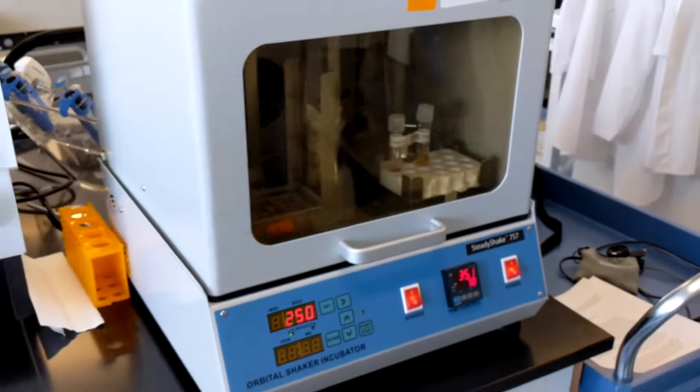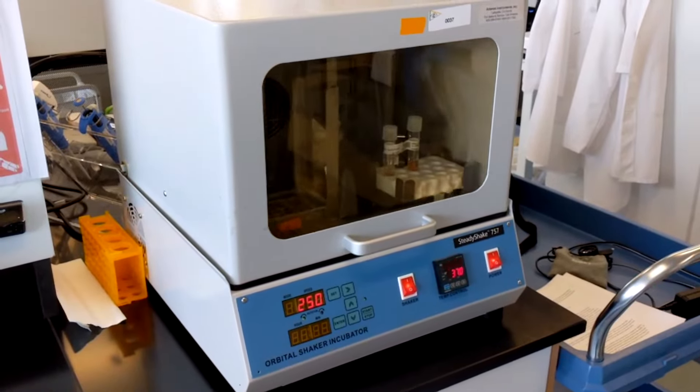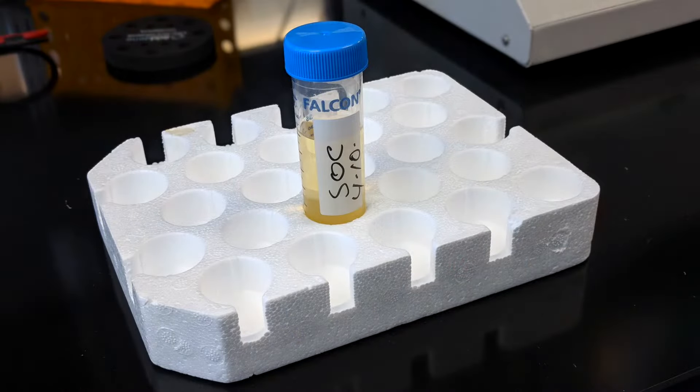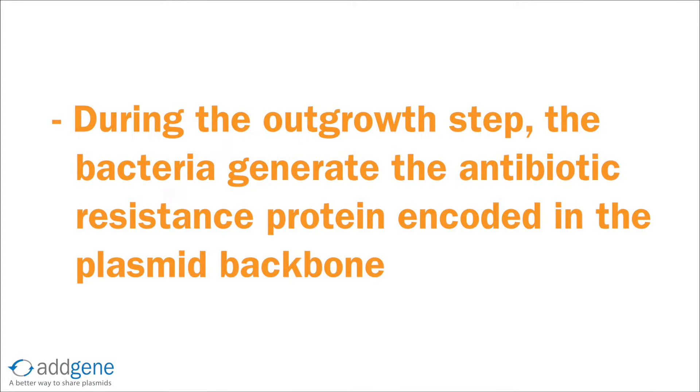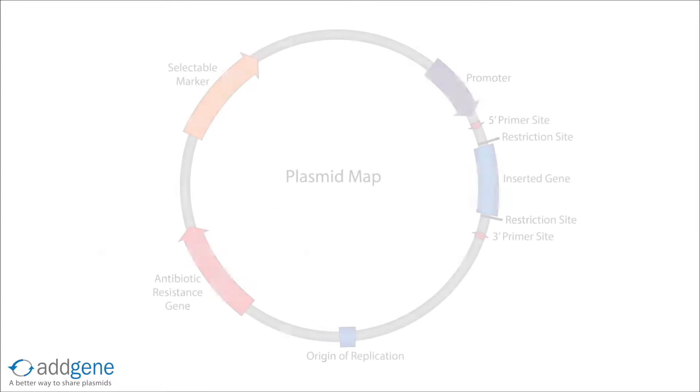After heat shock, we allow the transformed cells to grow for a short period of time in a shaking incubator. During this outgrowth step, the transformed bacteria are incubated in a rich medium like SOC, which contains glucose. This brief period gives the bacteria time to generate the antibiotic resistance proteins encoded in the plasmid backbone. This step is not as critical for plasmids containing ampicillin resistance and can be skipped in instances where ampicillin is used.